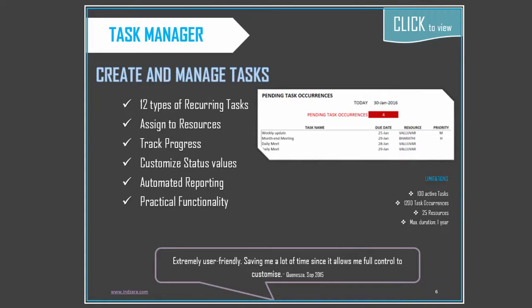If you're looking to manage a day-to-day task list, the Task Manager Excel template is the right choice. It's easy to create one-time or recurring tasks, such as a weekly email update to the project team or a monthly report to your project sponsor. You can assign tasks to resources, update their status, and close them when complete. Reporting is automated, saving you time.